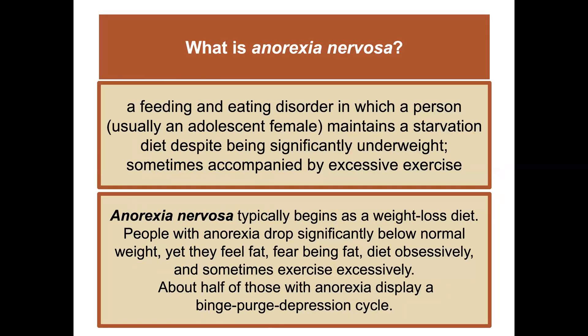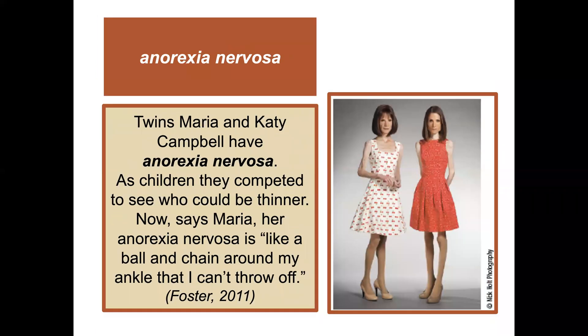Anorexia nervosa is a feeding and eating disorder in which a person, usually an adolescent female, maintains a starvation diet despite being significantly underweight, sometimes accompanied by excessive exercise. Anorexia nervosa typically begins as a weight loss diet. People with anorexia drop significantly below normal weight, yet they feel fat, fear being fat, diet obsessively, and sometimes exercise excessively. About half of those with anorexia display a binge and purge cycle.